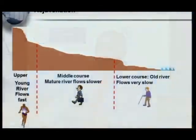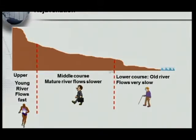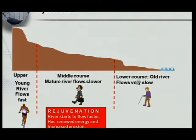Rejuvenation means making something younger. Now let's have a look at our river here. What's important is you must know: you've got the upper course, the young river, because it flows very fast. Then the middle course, the mature river, flowing a bit slower. And the lower course, the old river, where the river flows very slowly.